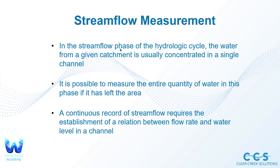We're talking about stream flow measurement today. In the stream flow phase of the hydrologic cycle, the water from a given catchment is usually concentrated in a single channel. When we have rainfall on a certain site and it runs off, most typically it's going to go into some sort of catchment or facility that catches that additional runoff and stormwater — into the city water system, a storm sewer drain, and then finally get concentrated to one single channel. It is possible to measure the entire quantity of this water in this phase if it has left the area.